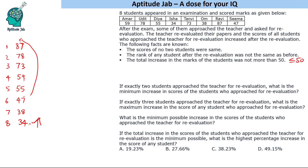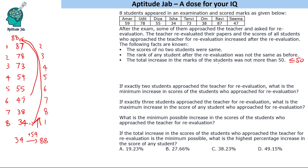If the last-place student directly jumps to 88, they become rank 1. But the increase would be 34 to 88, which is 54 — exceeding the limit of 50. So this is not possible, which means at least two people will need to change their scores.